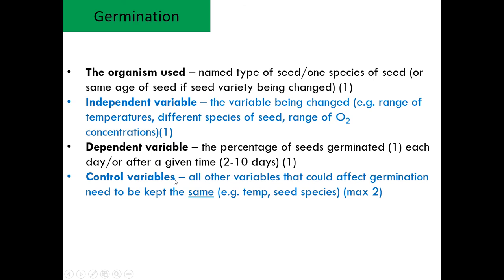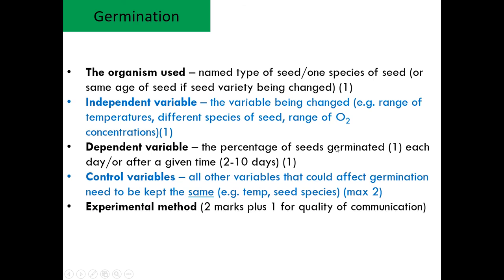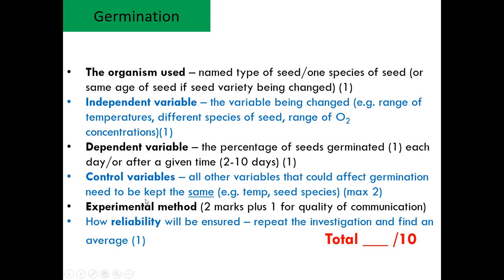You also need a control variable — explain what will be kept the same to ensure it's a fair test. You need an experimental method, and in your IGCSE you'll be asked to design an experiment marked on: choosing the correct organism, the independent variable (what you change), the dependent variable (what you measure), control variables (how you make it a fair test so the dependent variable only changes based on your independent variable), and finally two marks plus one for quality written communication — using the right biological words and a clear method that anybody could follow. Reliability should be ensured by repeating the investigation and finding an average.